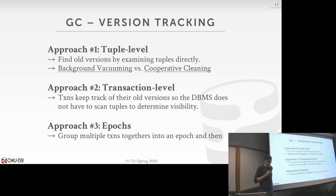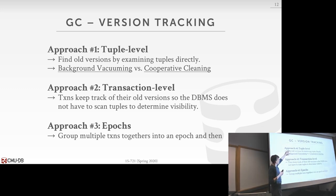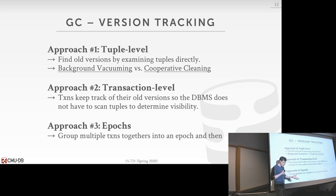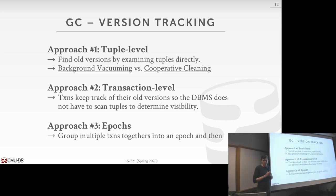Let's talk about how to track versions that transactions create. There's a typo in the slides. The first approach is background vacuuming — a separate thread that goes through tables and identifies versions to prune. This is what we first covered in the initial MVCC lecture.